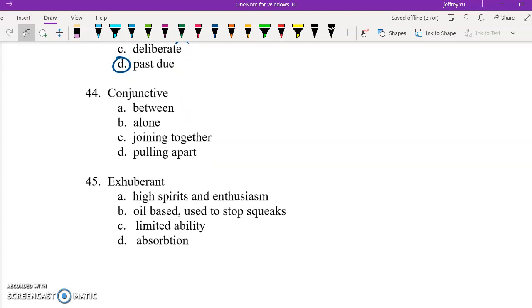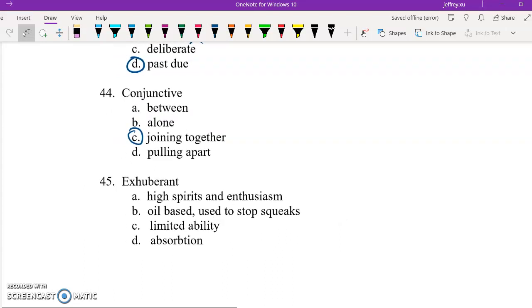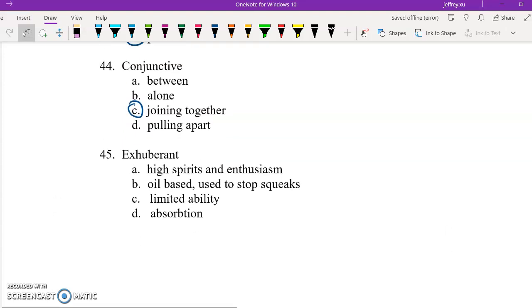44, conjunctive. If you think of the fanboy stuff we just talked about, they join together two independent clauses of a sentence. So applying that knowledge slash logic here, you can reasonably infer that conjunctive means joining together, even if you didn't know what it meant. So again, you can pull different parts of your knowledge and synthesize them to answer some of these questions.